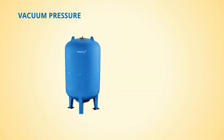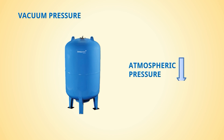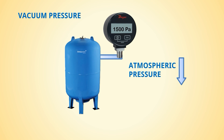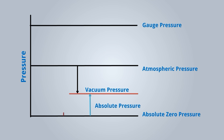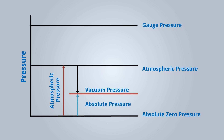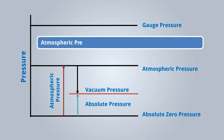This is a pressure vessel. Vacuum means the pressure which is below atmospheric pressure. If we add a vacuum gauge and it reads 1,500 Pascal, the vacuum pressure is 1,500 Pascal below atmospheric pressure. In the graph, the vacuum pressure line is below the atmospheric pressure line, and from absolute zero pressure upward is absolute pressure. So atmospheric pressure equals vacuum pressure plus absolute pressure.